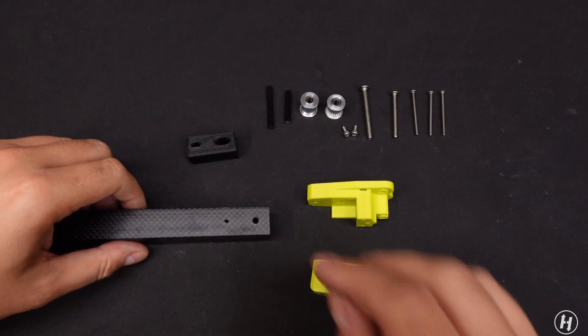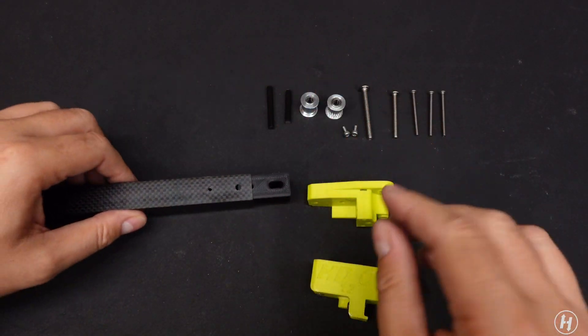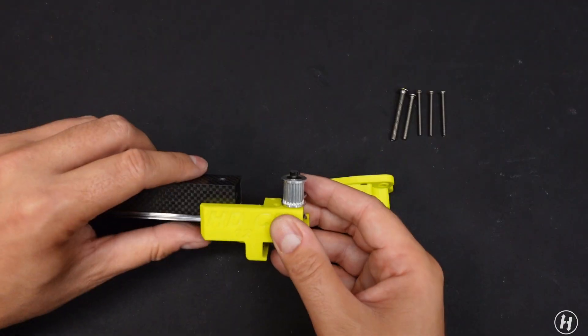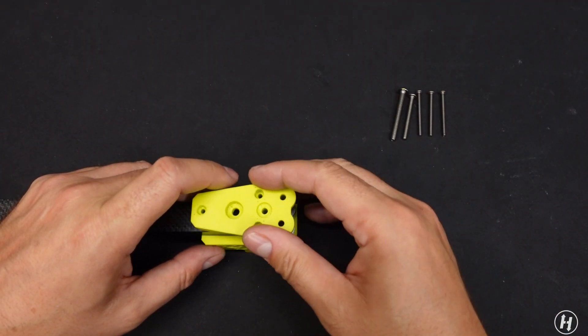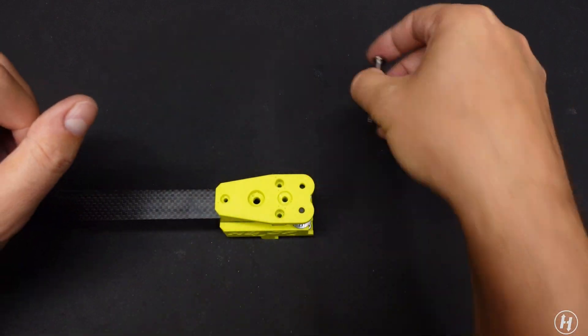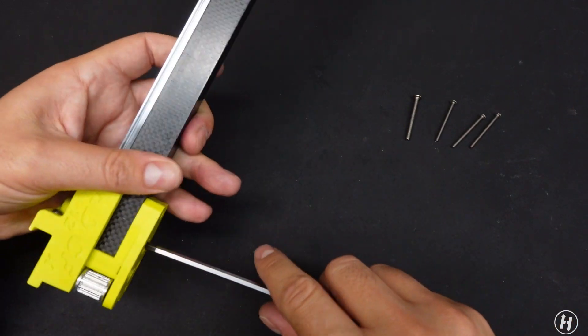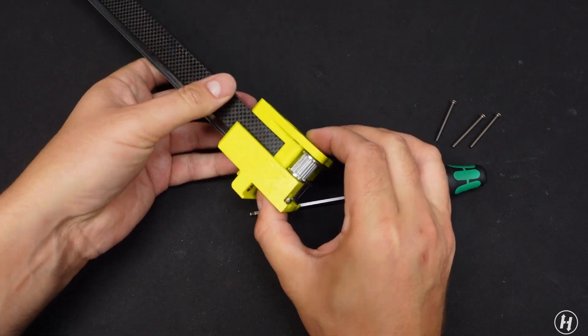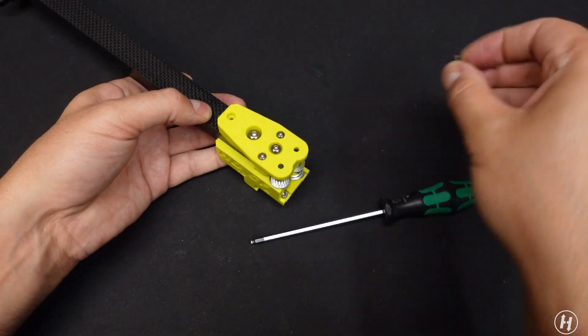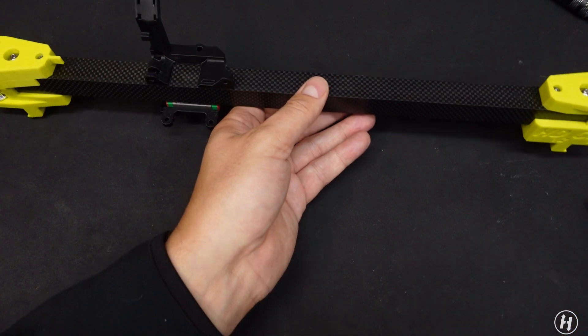Inner blocks are inserted in the tube to avoid crushing it with the carriage. Now some screws. And voila!